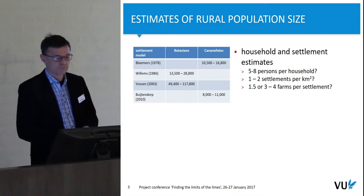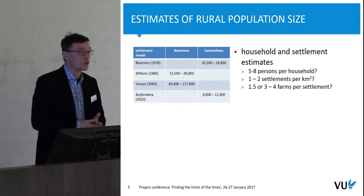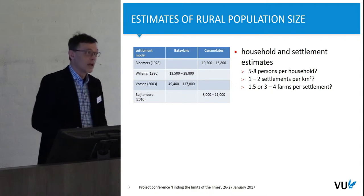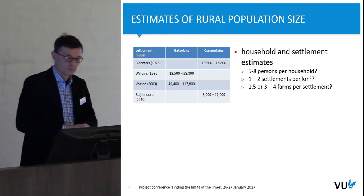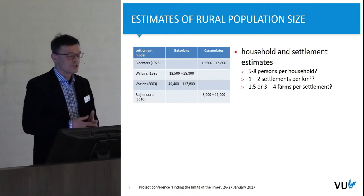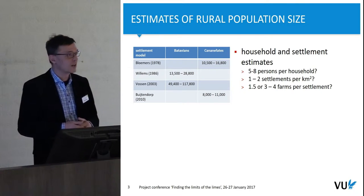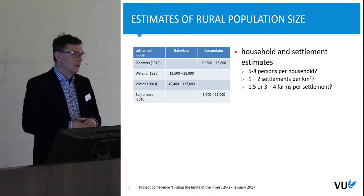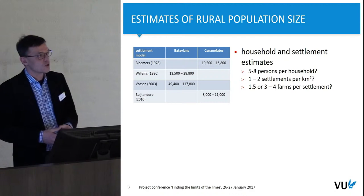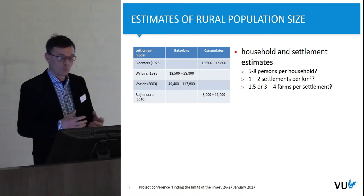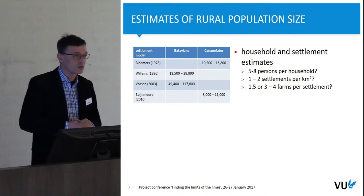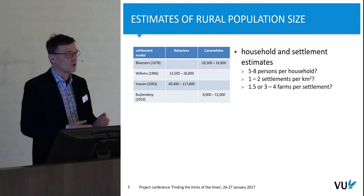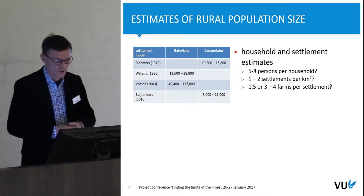If we look at published estimates of the rural population size in the area — so this is the people that lived outside the towns and the forts — there are some basic assumptions that have been suggested, like that each household, each farm, had between five and eight persons living there. It has also been suggested that the actual density of settlement in the area might have been between one and two settlements per square kilometer.